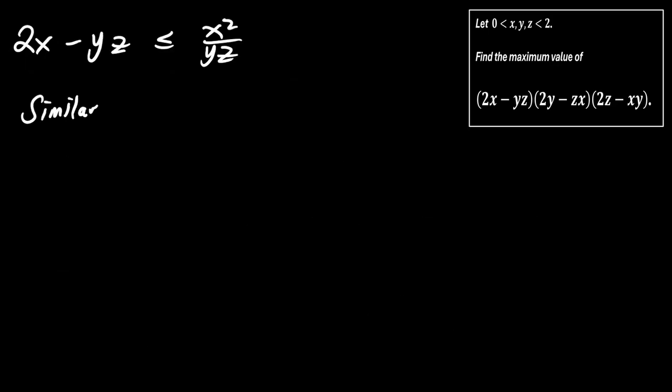By symmetry, we also get the following: 2y minus zx is less than or equal to y squared over zx, and 2z minus xy is less than or equal to z squared over xy.